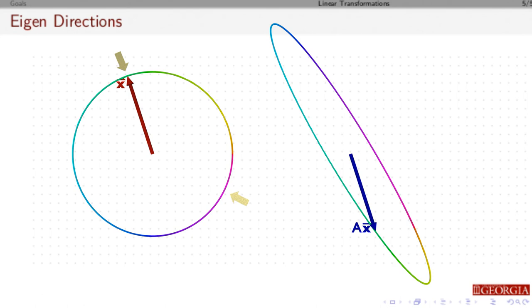So those two particular directions are interesting in the sense that a times x gives me basically the same vector, but it's either flipped or either stretched or compressed. So knowing something about those particular directions tells me something about the operator a times x.